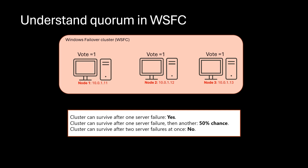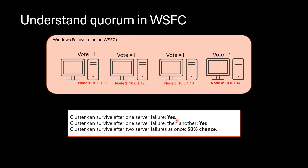If two servers fail at the same time, you face outage and the cluster cannot survive. With four servers, the cluster can survive one server failure, and also a second sequential failure. There is a 50% chance of survival with two simultaneous failures. So, more servers means a higher chance of cluster survival. But if 50% of the nodes fail at the same time, no matter how many nodes you have, you have a 50% chance the whole cluster — even the primary — will fail.